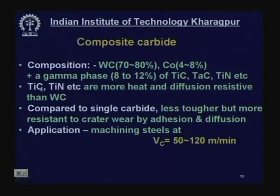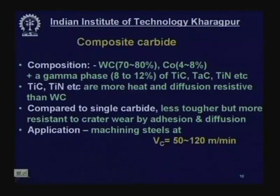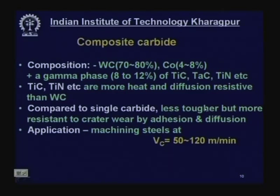These added materials — titanium carbide, tantalum carbide, titanium nitride — are more heat and diffusion resistant than tungsten carbide. They are chemically stable and reduce the rate of diffusion wear and adhesion wear, which were the main problems in machining steels. Composite carbide is excellent for machining steels, though less tough than single carbide, making it unsuitable for heavy impact or interrupted machining.